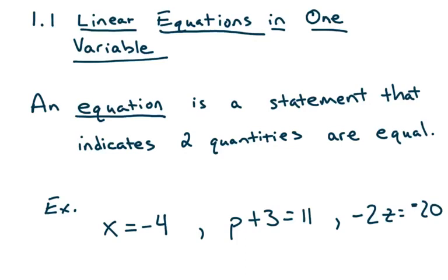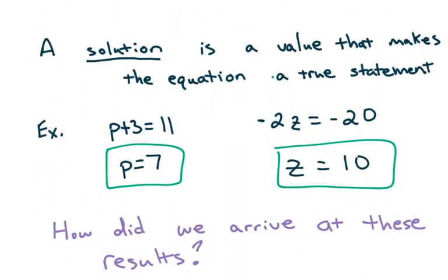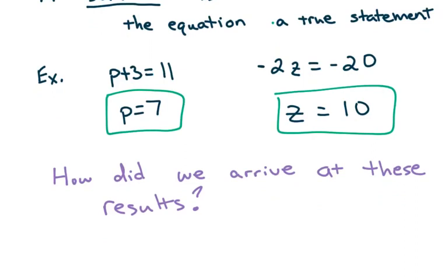Section 1.1 is linear equations in one variable. What is an equation? An equation is a statement that indicates two quantities are equal. The key thing to realize is that an equation has an equal sign, so you have two parts, and an equation indicates that each of those are equivalent. A solution is a value that makes the equation a true statement. For example, p equals 7 makes it such that 7 plus 3 equals 11. And if z is 10, negative 2 times 10 is negative 20. The solution is what makes the statement true.